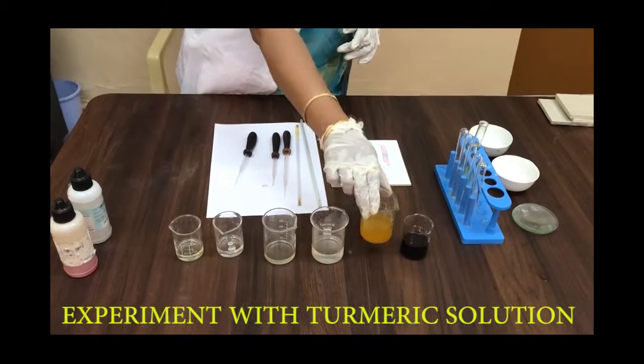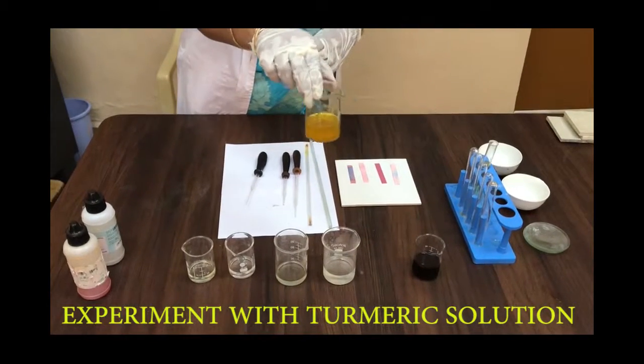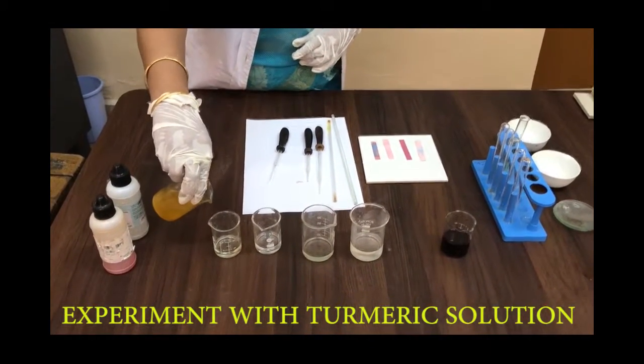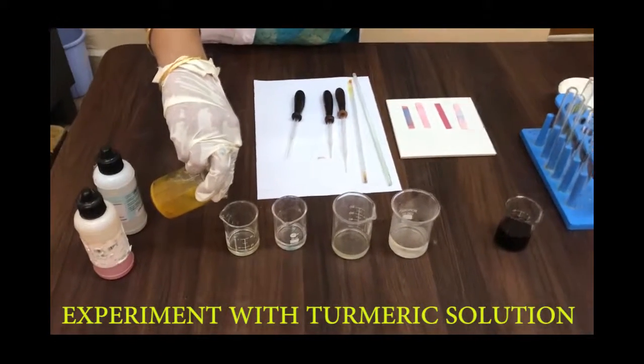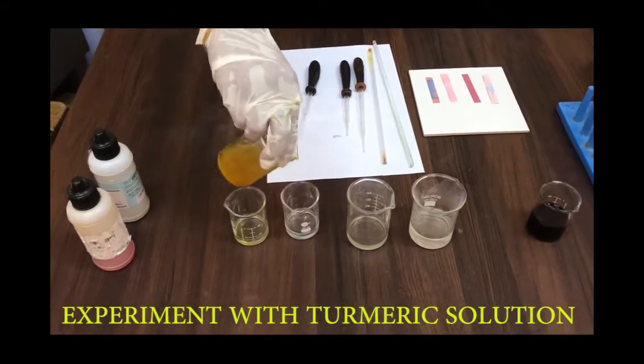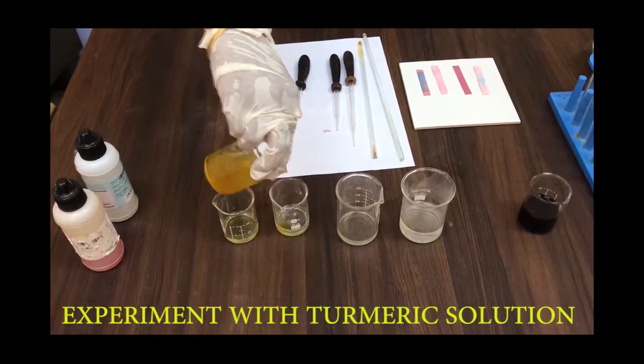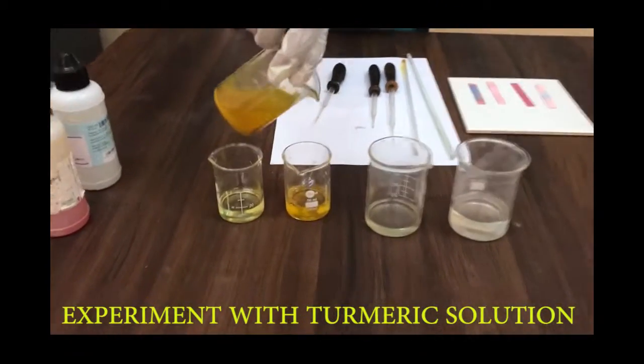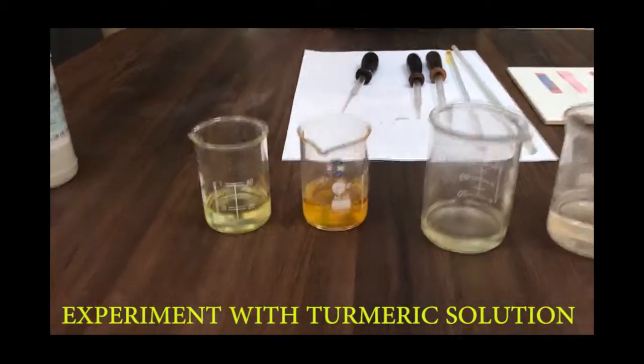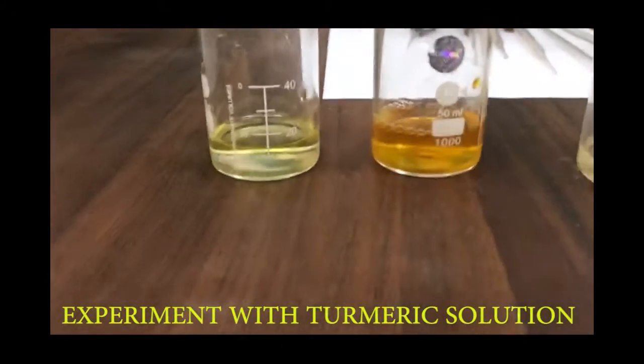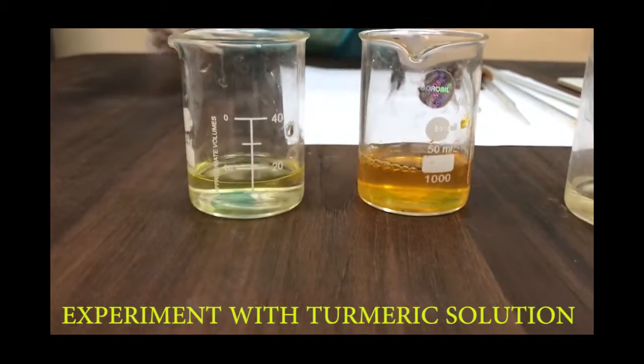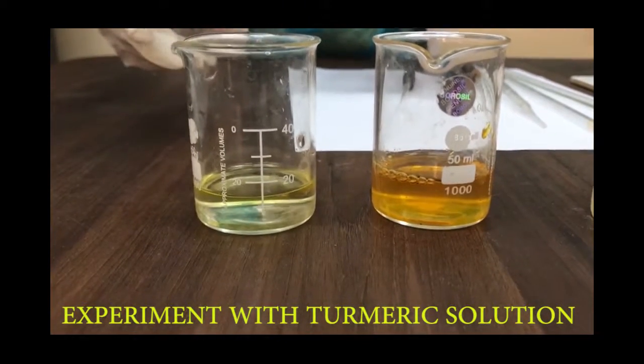Let's take another natural indicator, turmeric solution. Add a few drops of turmeric solution to both the samples. Let's see the color change. In the first beaker, the color changes to reddish brown.